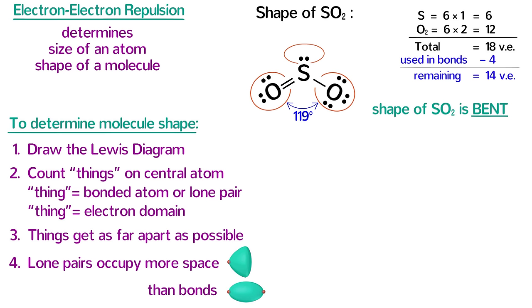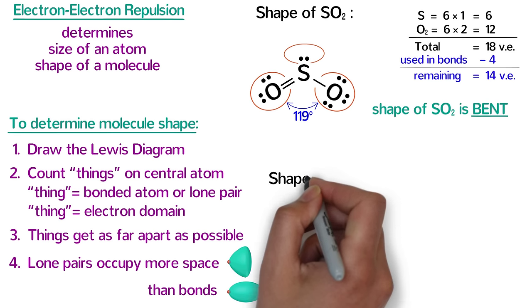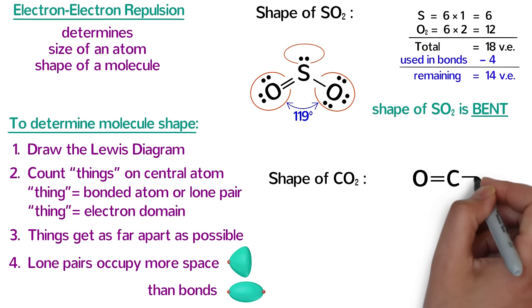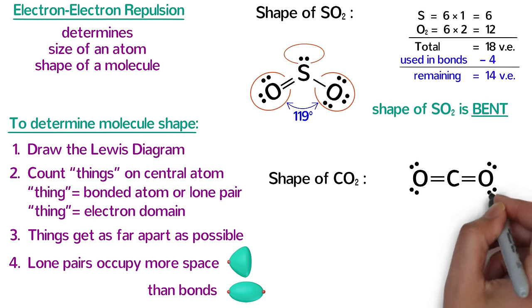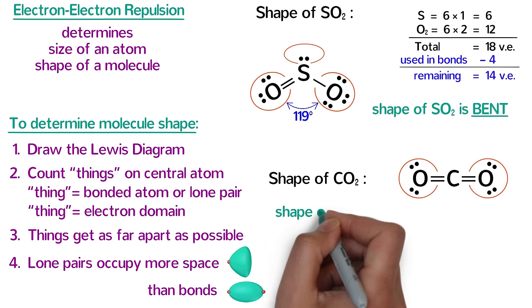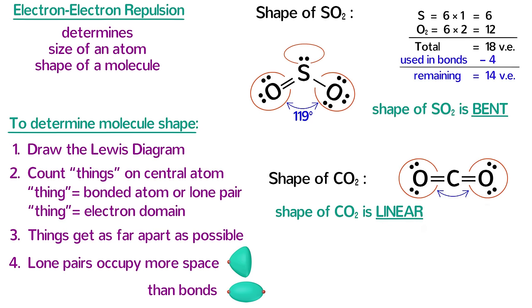Now let's apply these principles to determine the shape of several other molecules. Let's start with carbon dioxide. For the Lewis diagram, carbon is in the middle and it forms double bonds to each oxygen, which both have two lone pairs. Next, we need to count the number of things on the central atom. In this case, there are only two things on carbon. Although there are lone pairs in the molecule, the lone pairs on oxygen do not affect the shape because they are not on the central atom. Since there are only two things, those two things are already as far apart as possible. Because the three atoms are all in a line, we say that the shape of CO2 is linear and the bond angle is 180 degrees.